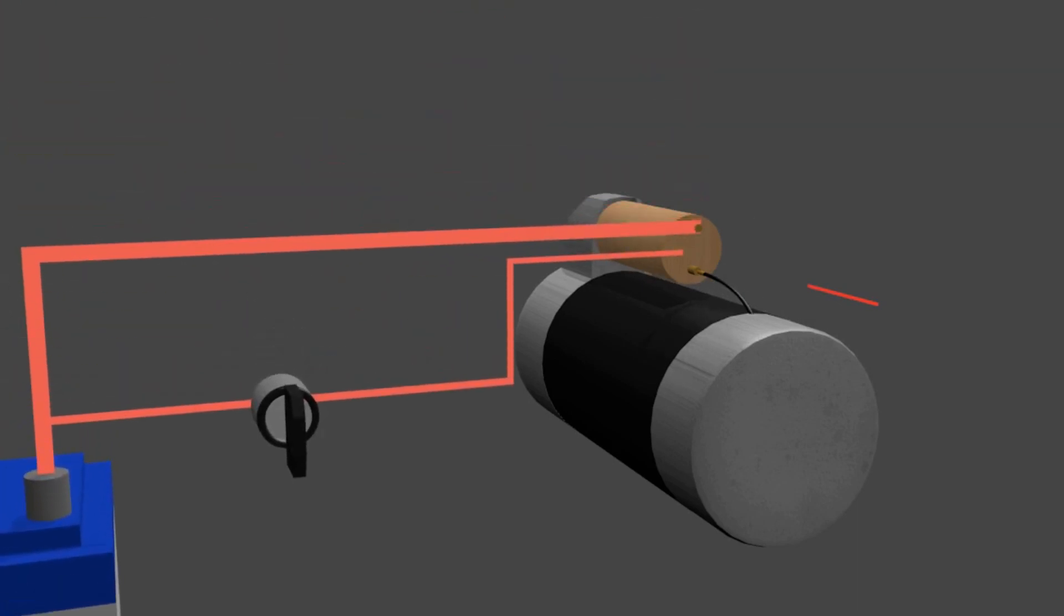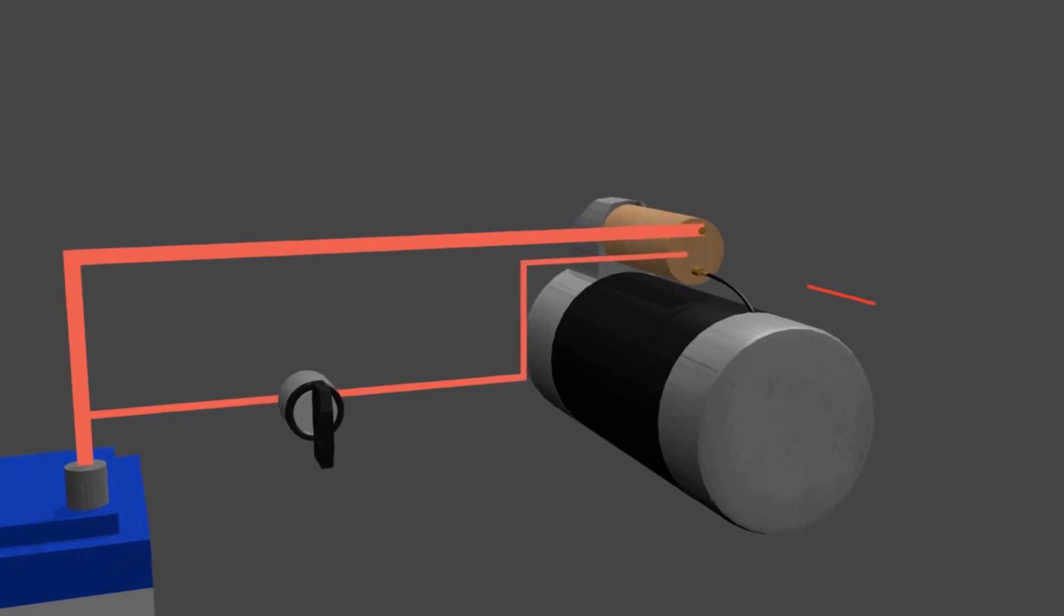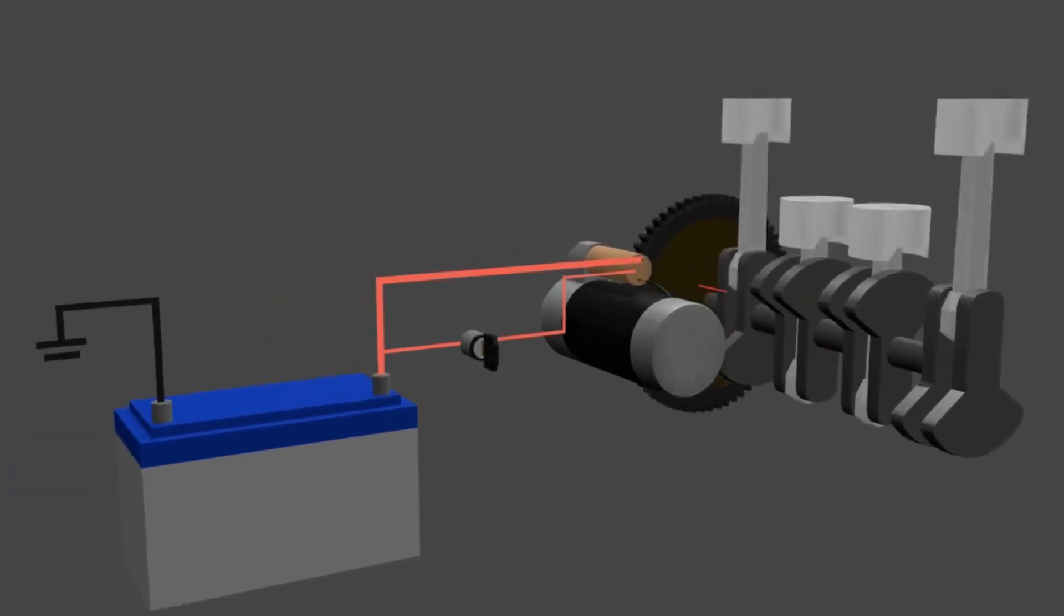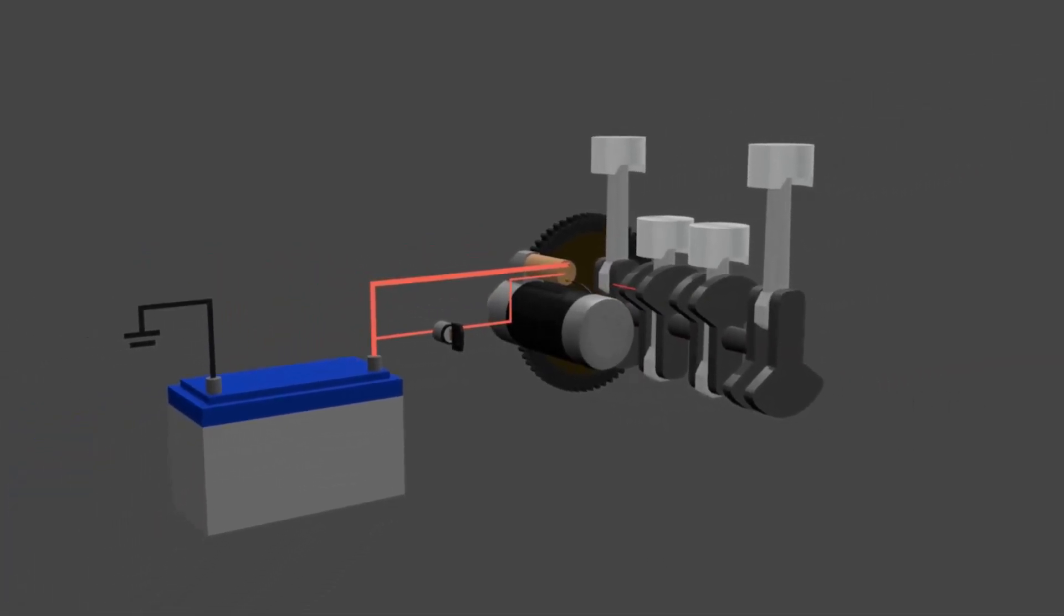So, the control of the starter system is on the solenoid. Therefore, the ignition key as a switch is installed in the solenoid line and not in the starter motor line. That's an explanation of the starting system. Subscribe and stay tuned for the next videos.